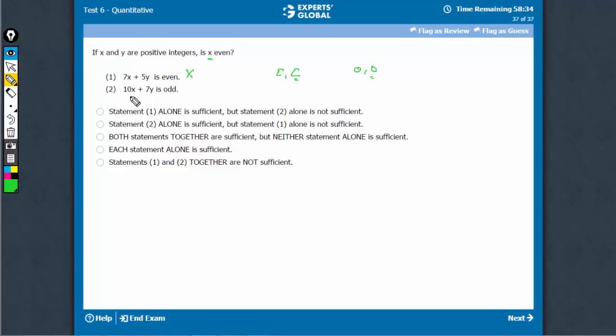Statement 2 says 10x plus 7y is odd. 10x has to be even. Therefore, 7y has to be odd. If 7y is odd, y is odd.